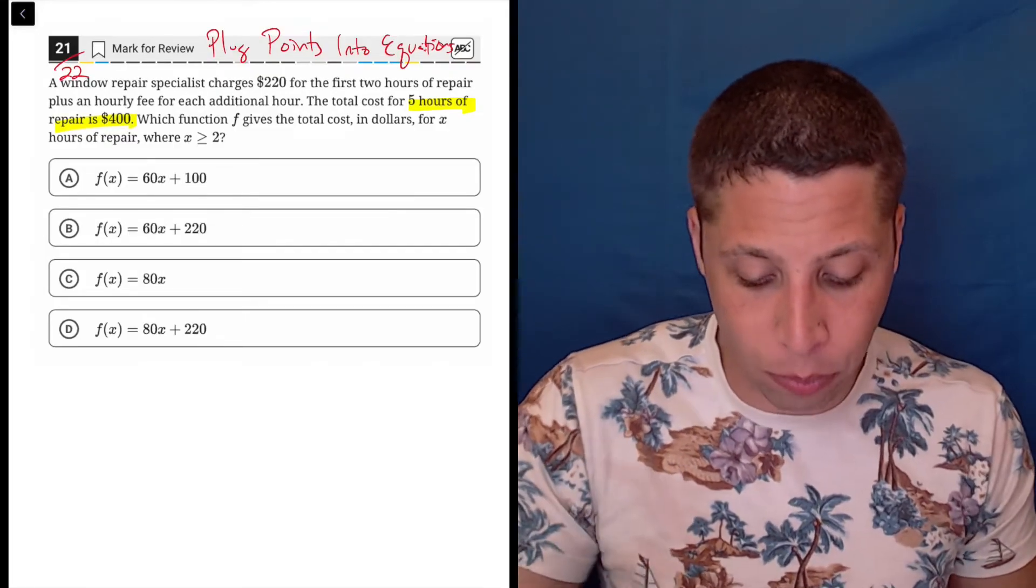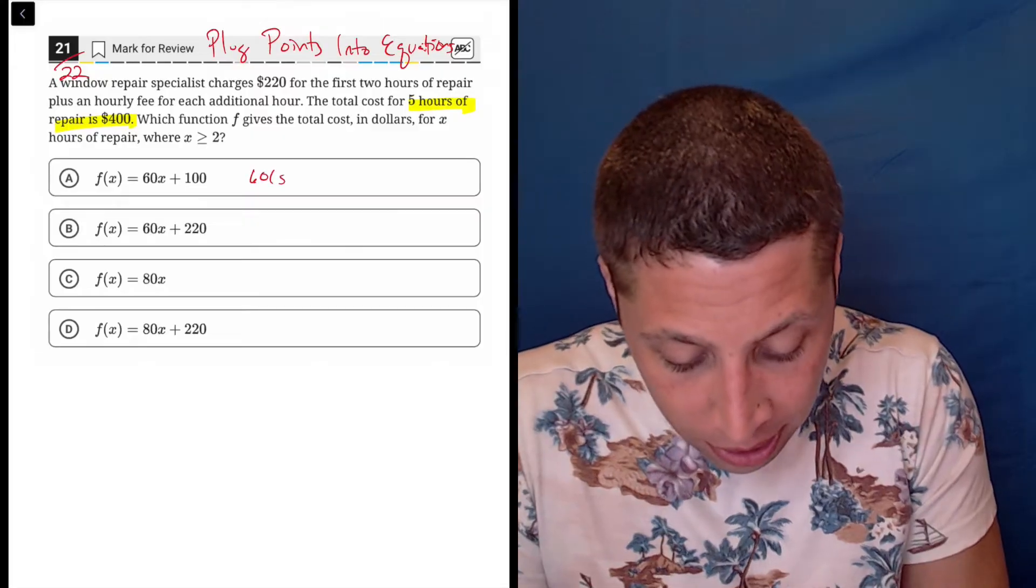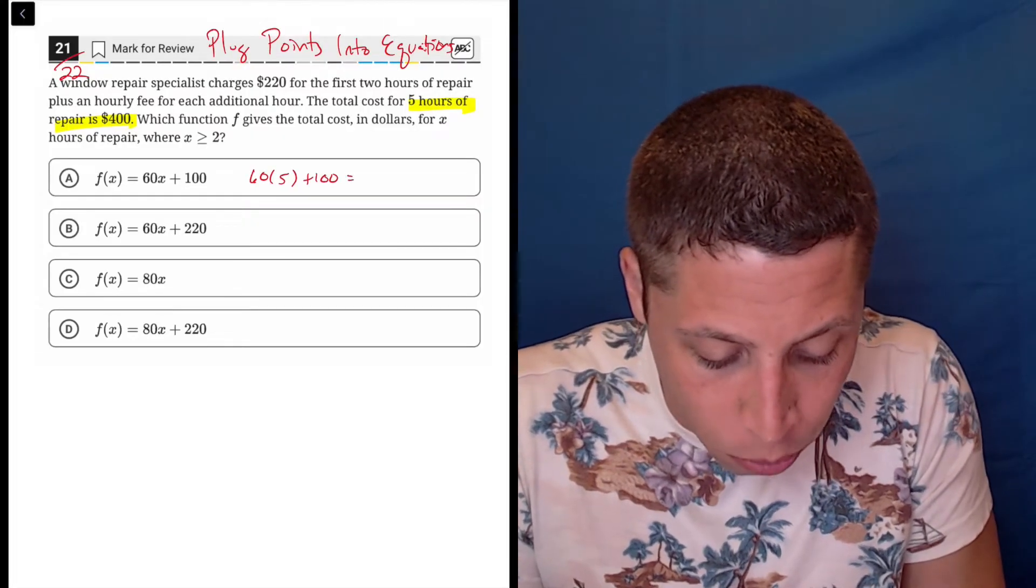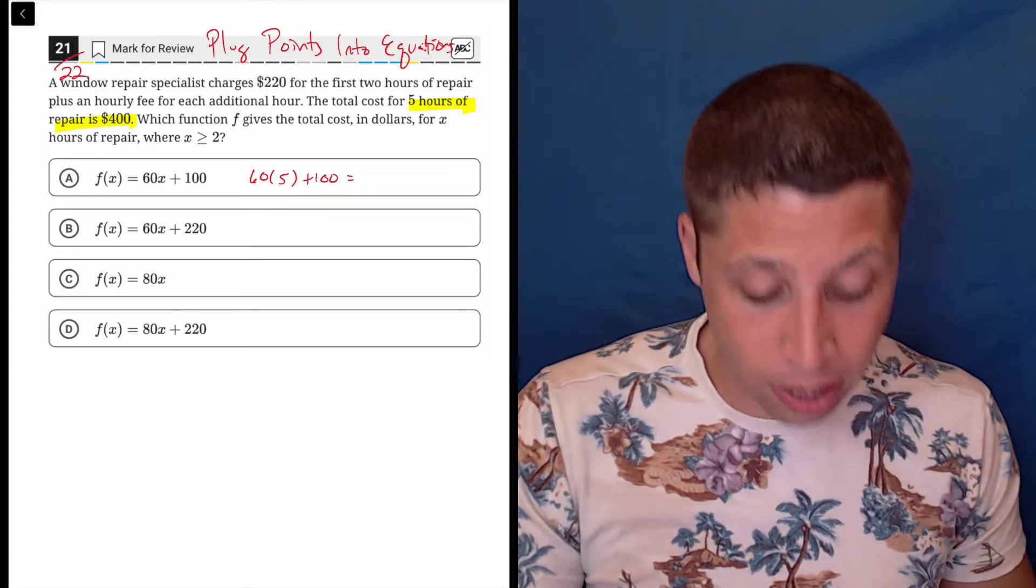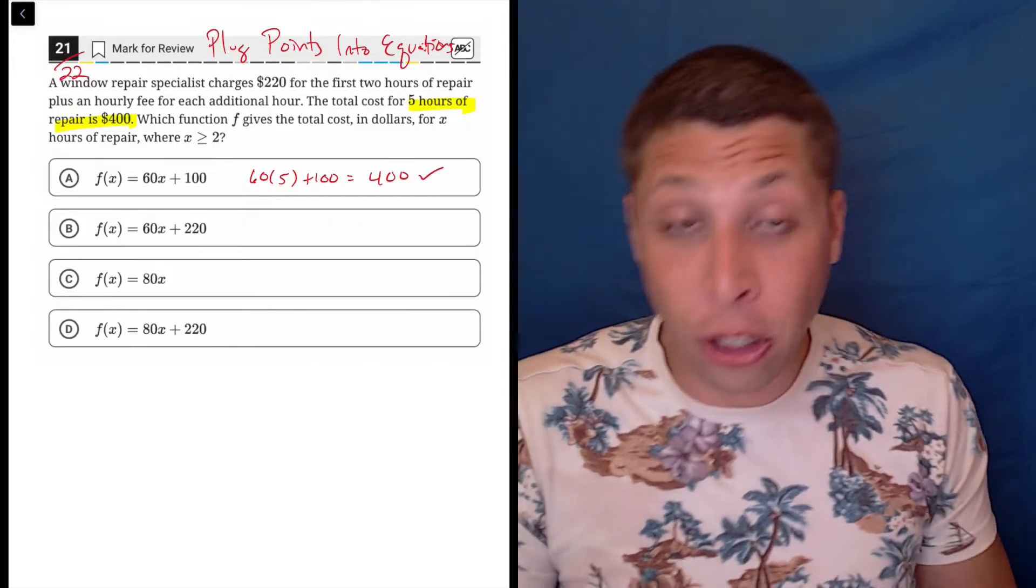Let's plug in five for X and see if we get 400. So 60 times five plus 100. Well, 60 times five is 300. 300 plus 100 is 400. So that looks good.